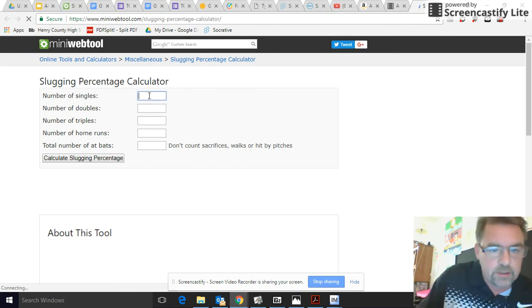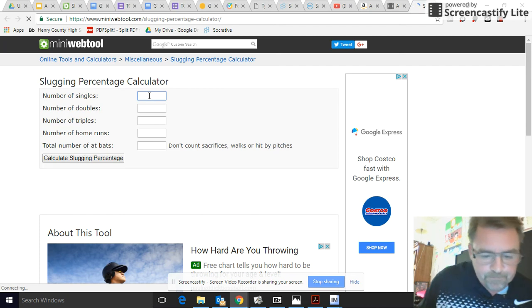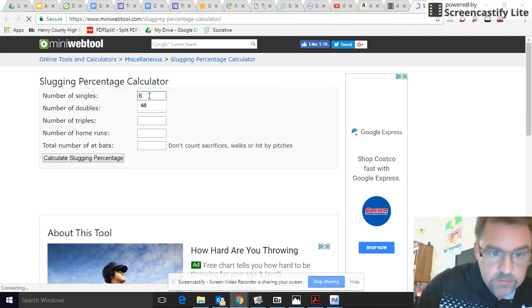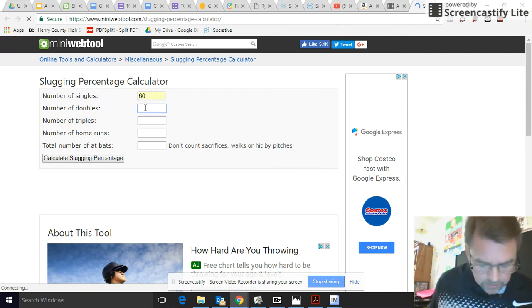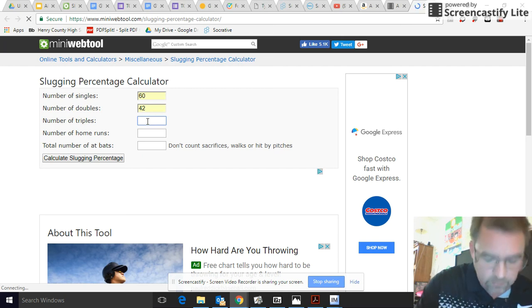So go ahead and click in, I'll show you how to use that. When you click, just put in the numbers. We had 60 singles, 42 doubles—make sure you type this in correctly.